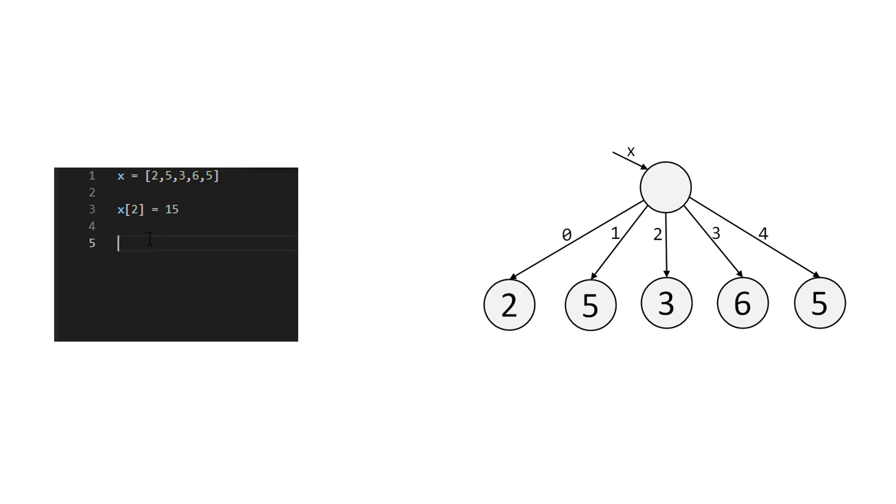So in this example, we're setting x of 2 equal to 15. So the computer is going to find the thing on the left, which is x of 2. And when it finds that edge, it's going to make it point to the thing on the right, which is 15.